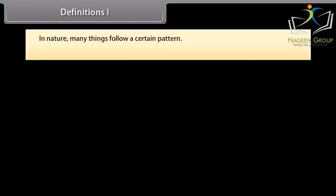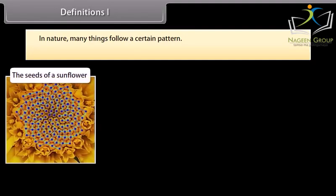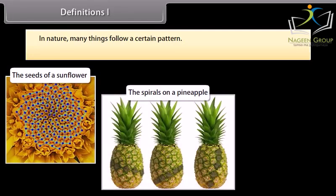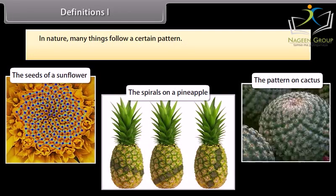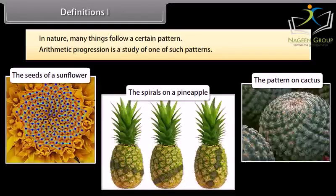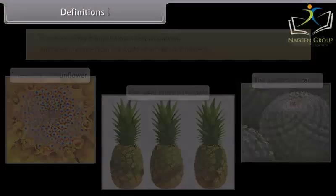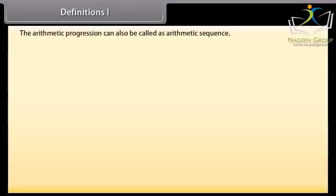In nature, many things follow a certain pattern, such as the seeds of a sunflower, the spirals on a pineapple, the pattern on cactus, and so on. Arithmetic progression is a study of one of such patterns. The arithmetic progression can also be called an arithmetic sequence. Before talking about arithmetic sequence, let us know what a sequence is.